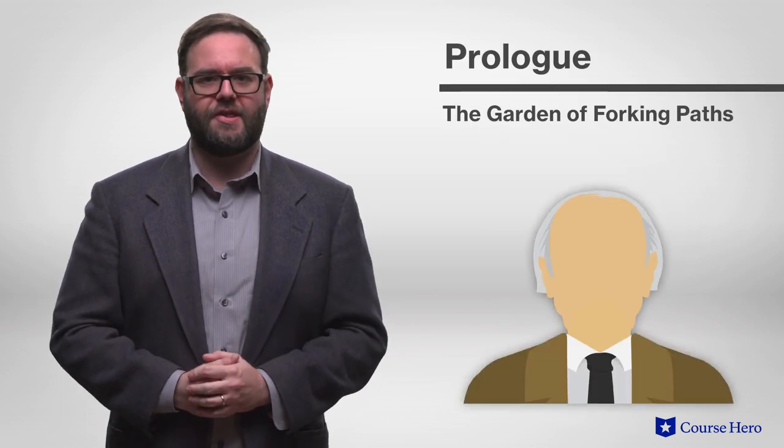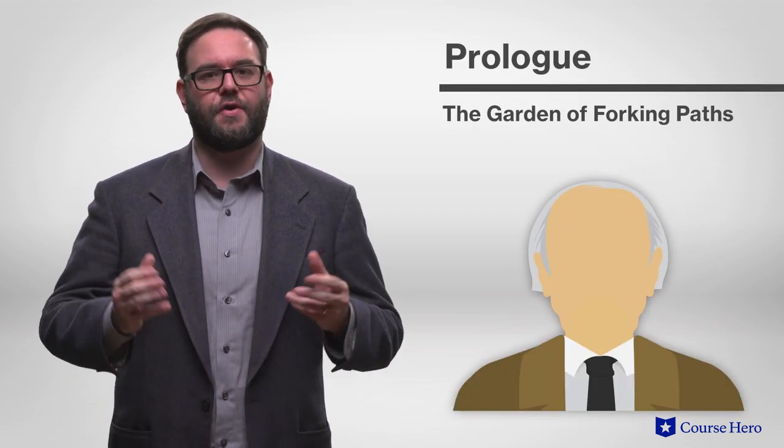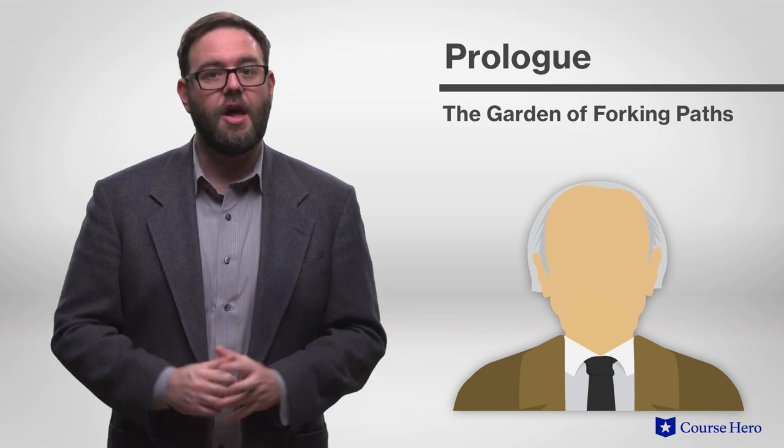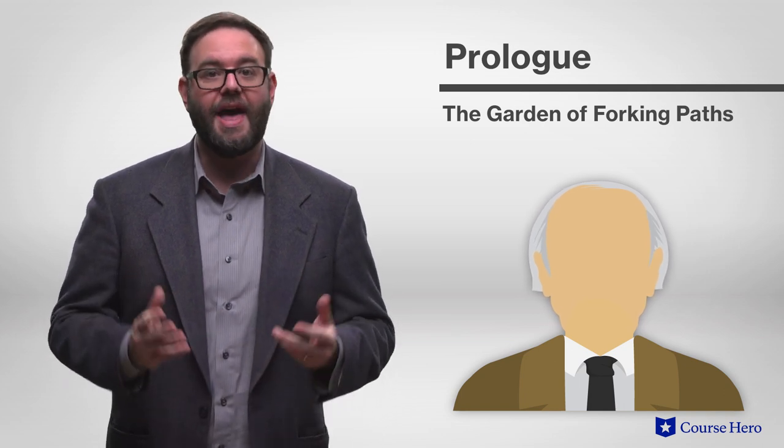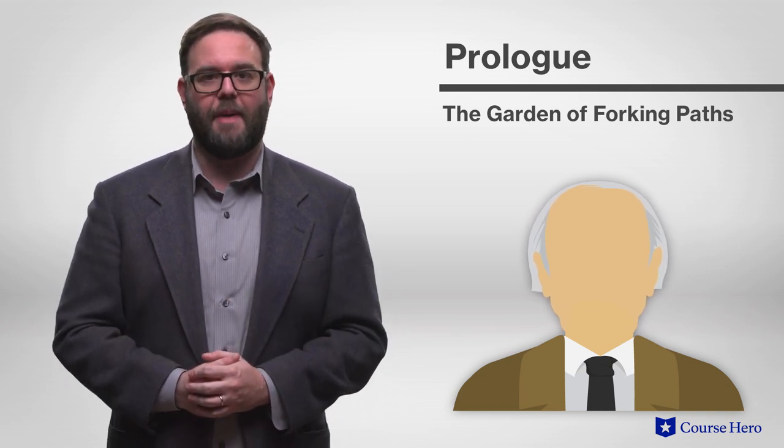In the prologue to part one of Ficciones, Borges introduces the first eight stories of Ficciones, previously published in 1941 as the collection The Garden of Forking Paths, and gives hints on how to read some of them.